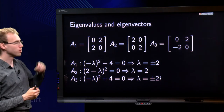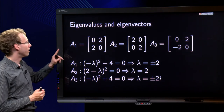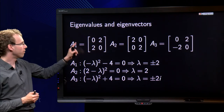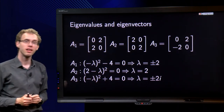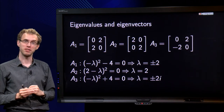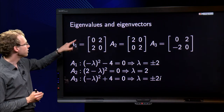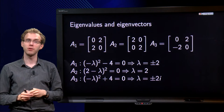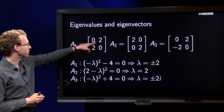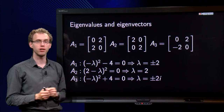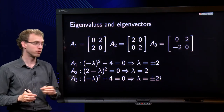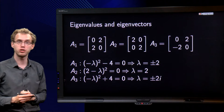Let's look at some examples first. We have three 2x2 matrices: A1, A2, and A3, and let's compute the eigenvalues of those three matrices. So we add a minus lambda on the diagonal and compute the determinant, so we get lambda squared minus 4 equals 0 for the first one. Or lambda squared equals 4, so lambda equals plus or minus 2.